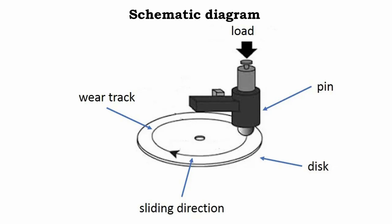This figure shows the schematic diagram of the pin on disc tribo tester. As we can see, there is a pin on which the vertical load is applied, and below this pin, the disc is touching the end of the pin, which rotates and creates a circular wear track.